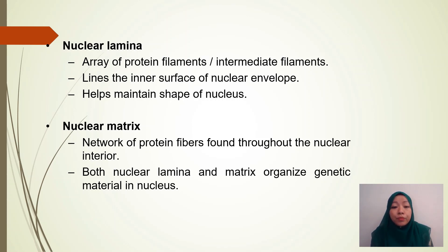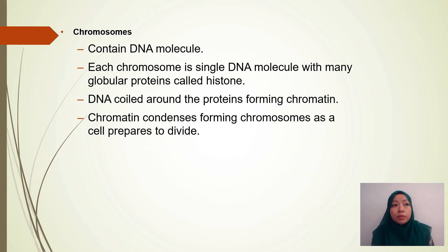The nuclear matrix is a network of protein fibers found throughout the nuclear interior. Both the nuclear lamina and nuclear matrix organize the genetic material inside the nucleus. Chromosomes develop when chromatin becomes condensed. Each chromosome contains a DNA molecule with many globular proteins called histones. Histones bind with the DNA molecule, and the DNA coils around the histones forming chromatin, which later condenses to form a chromosome as a cell prepares to divide.